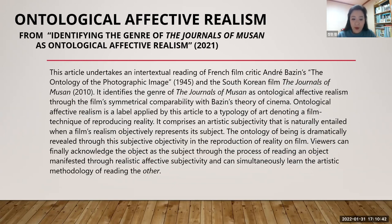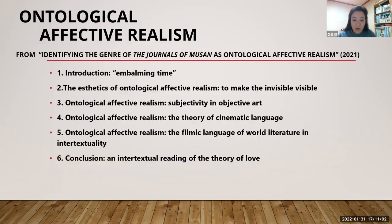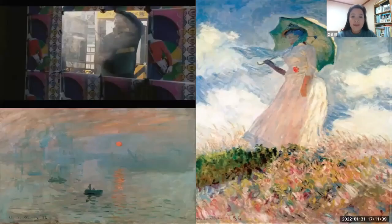Lastly, it is about ontological affective realism. It is a journal study. In this article, I read how the Korean film The Journals of Musan can be connected and suggested as an example of explaining affect theory. This article begins with the concept of time argued by the French critic André Bazin — how ancient Egyptian mummy-making is similar to the modern human activity of movie-making. In the body of the article, I explore the intertextual relation between Bazin's The Ontology of the Photographic Image and the Korean movie The Journals of Musan.